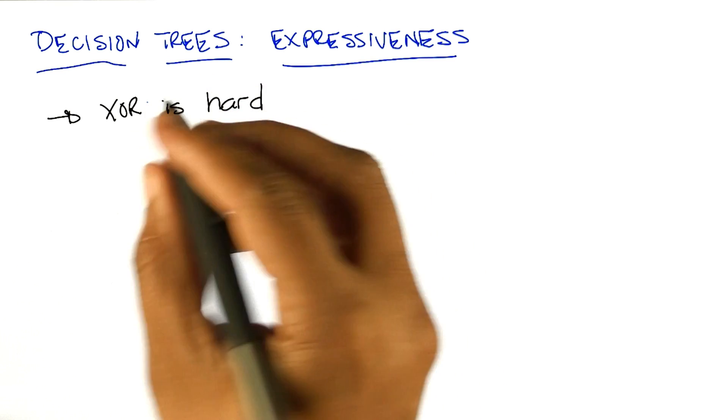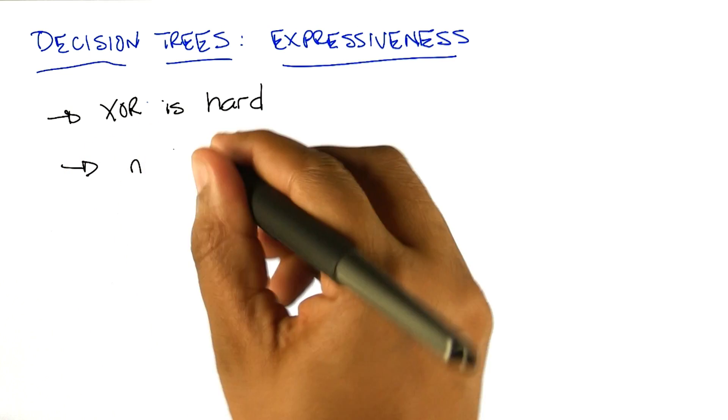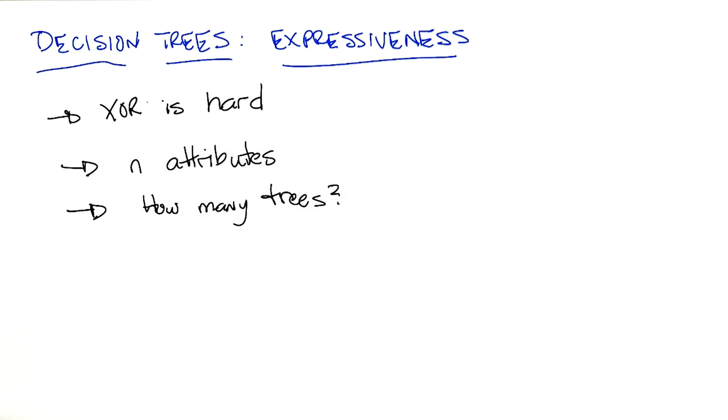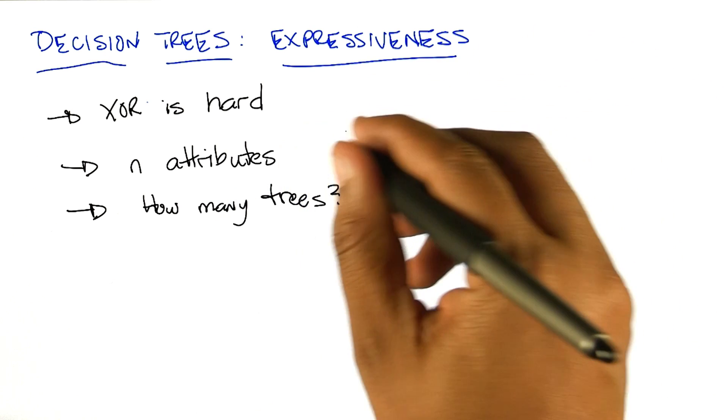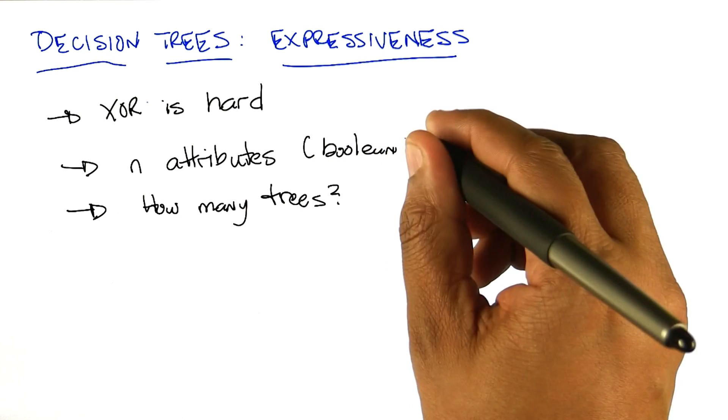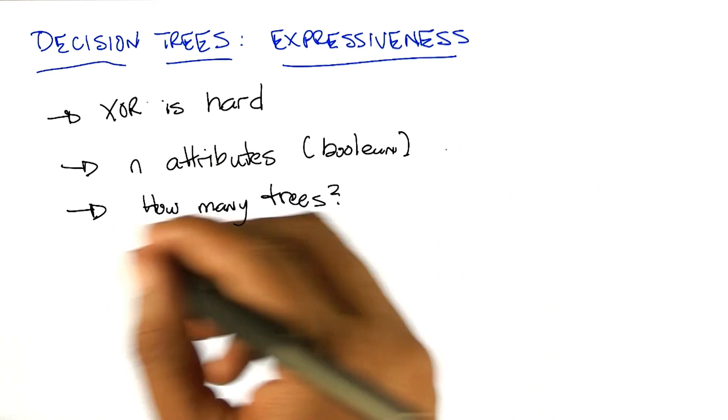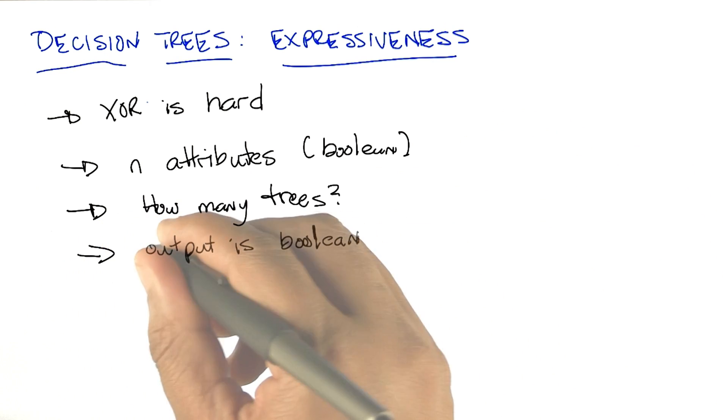So let's go back and look at, take the XOR case again and just speak more generally. Let's imagine that we once again have N attributes. Here's my question to you, Michael. How many decision trees are there? And look, I'm going to make it easy for you, Michael. They're not just attributes, they're Boolean attributes. And they're not just Boolean attributes, but the output is also Boolean. Got it?